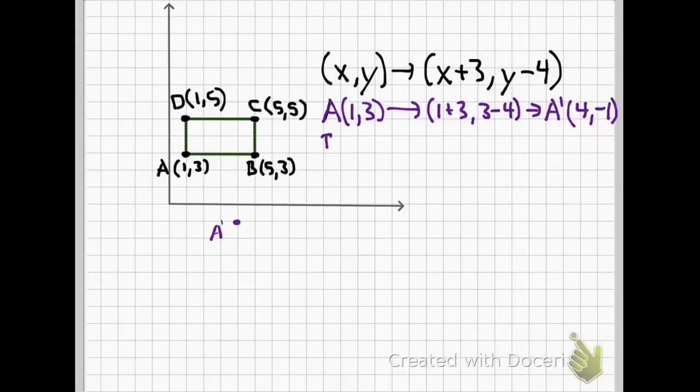B is going to be five, three. So if I add three to five, and then subtract four from three, I get that b prime is eight, negative one. Let's check that one out. Eight, negative one looks like right there. And if we look at it so far, just that segment a, b, and the new a prime, b prime, they look pretty good.